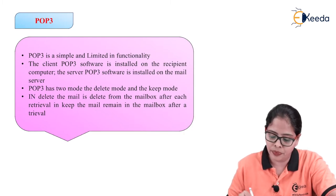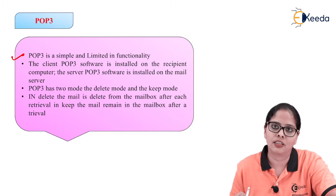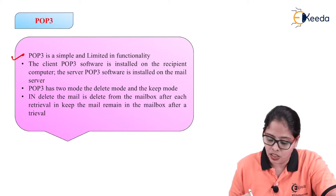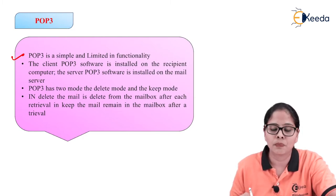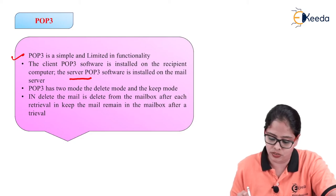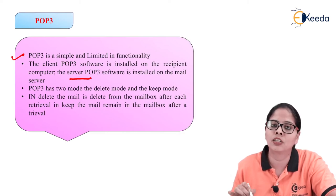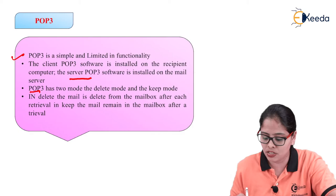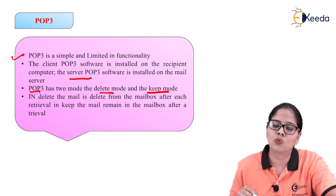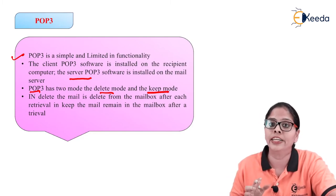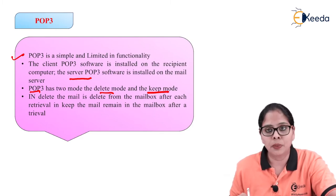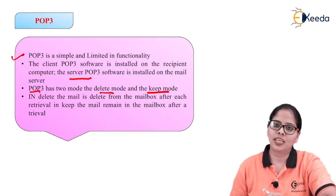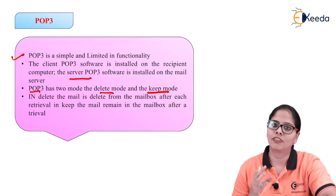POP3 has simple and limited functionality. The client POP3 software is installed on the recipient's computer and the server POP3 software is installed on the mail server. POP3 has two modes: delete mode and keep mode. In delete mode, the mail is deleted from the mailbox after each retrieval. In keep mode, the mail remains in the mailbox after retrieval — you are able to keep the mail even after reading it.